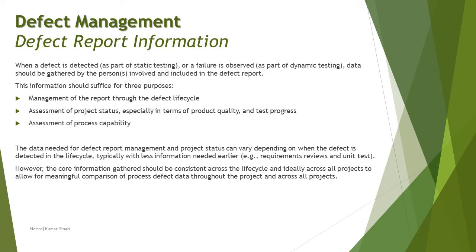The data needed for defect report management and project status can vary depending on when the defect is detected in the life cycle — typically with less information needed earlier, and more added later. When you first identify a defect, you may have only limited information, and you can log it with that. As the details get further explored, more details are contributed by the same tester or many other stakeholders who go through the defect report or are involved in its resolution.